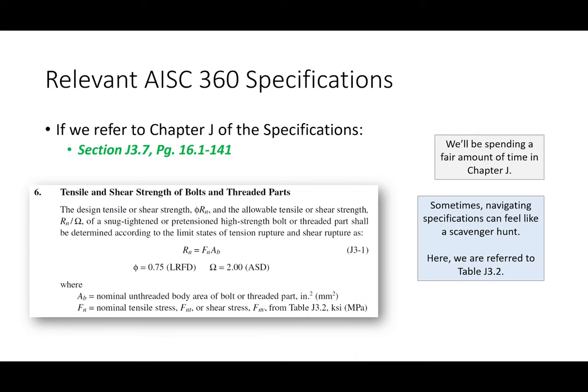The relevant specifications for threaded rods are actually not going to come out of Chapter D — they're going to come out of Chapter J. We've already started to dip our toes into Chapter J because we talked about it with block shear. Chapter J is going to monopolize our lives from here on out because Chapter J is the chapter on connections, so we're going to be talking about bolts and welds quite a bit.